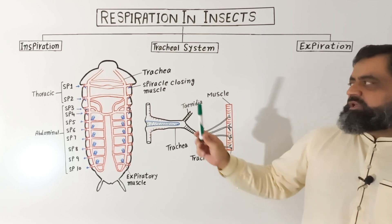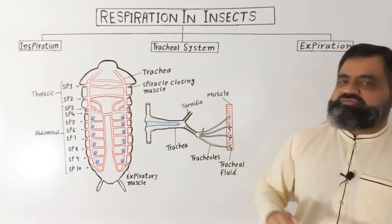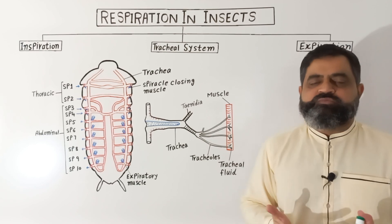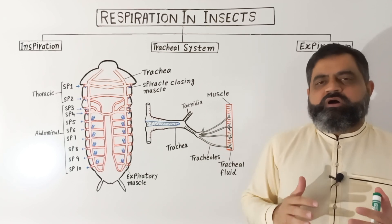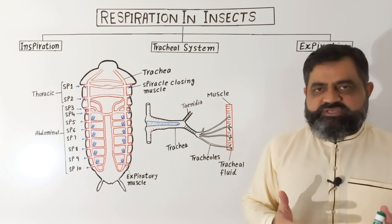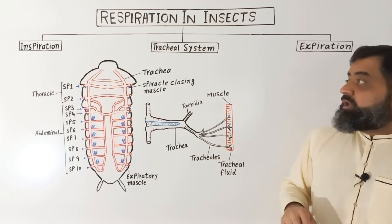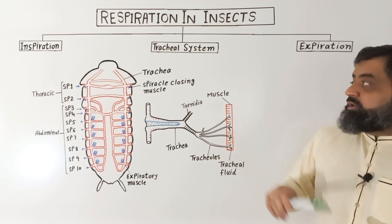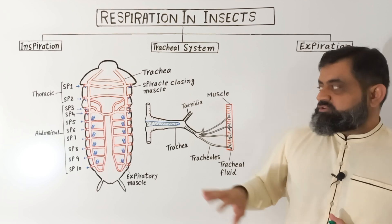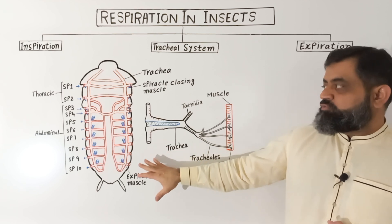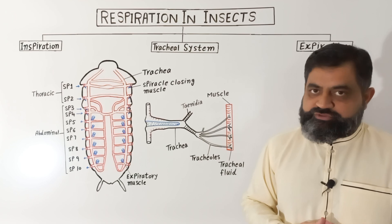The respiratory system of cockroach is composed of a tracheal system, and this system is mostly found in most of the arthropods in the animal kingdom. To understand the concept of the tracheal system, first of all we have to look at the cross section of the body of a cockroach.